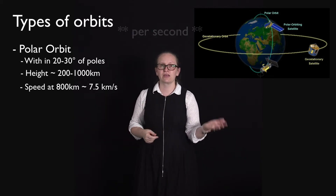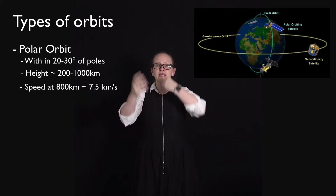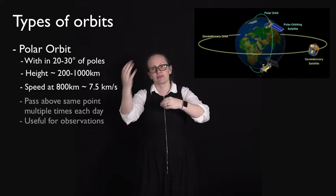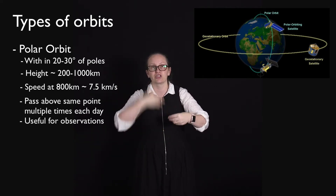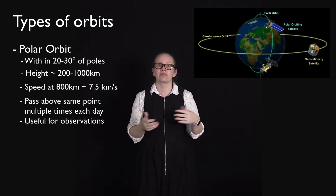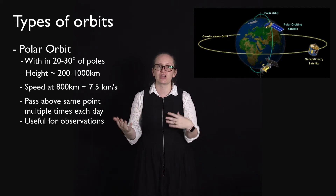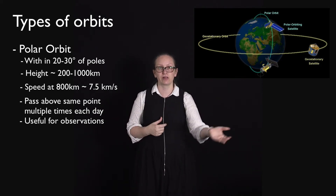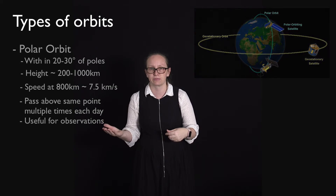As with the low earth orbits, these orbits pass over the same point on the earth several times each day, and so they're a good way of observing changes which are taking place in the polar regions and other regions as well.